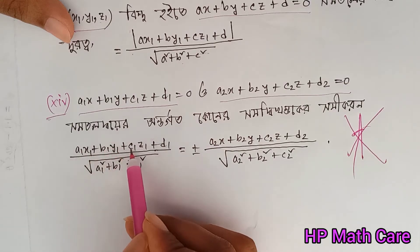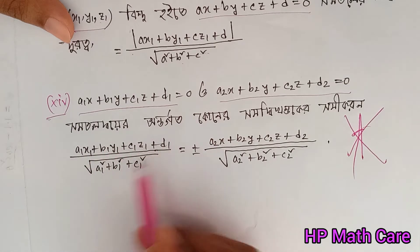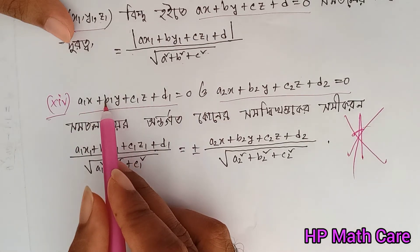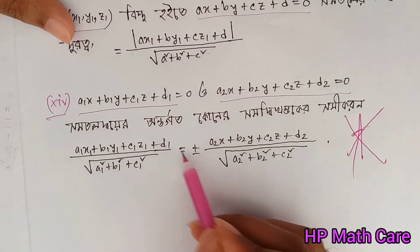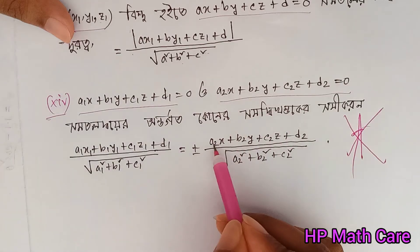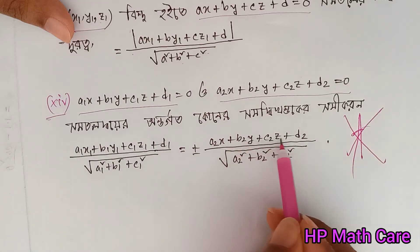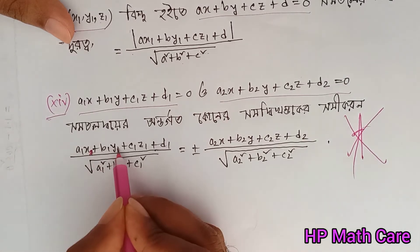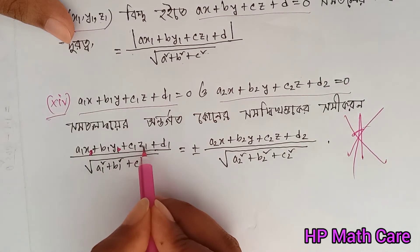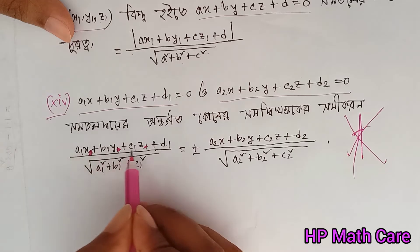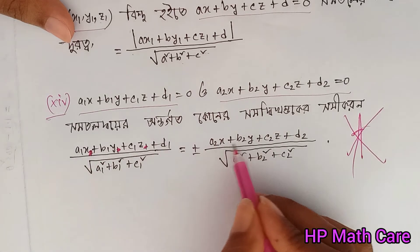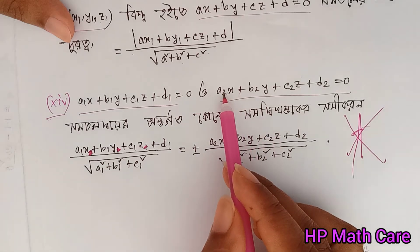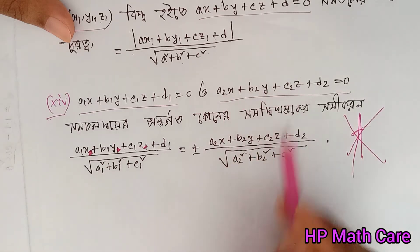d1, y1 plus c1, z1 plus d1, root 2. x plus y plus z, 1qb, plus minus a2x plus b2y plus c2z plus d2. We can do a1x plus b1 plus c1; we can do a2x plus b2y plus c2z plus d2, root 2. Then x plus b2x plus c1.